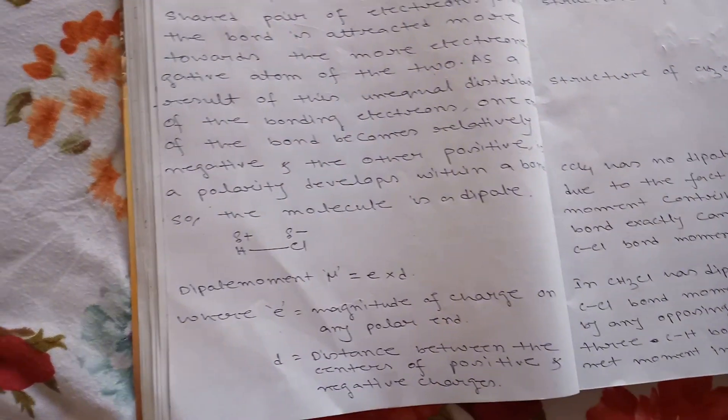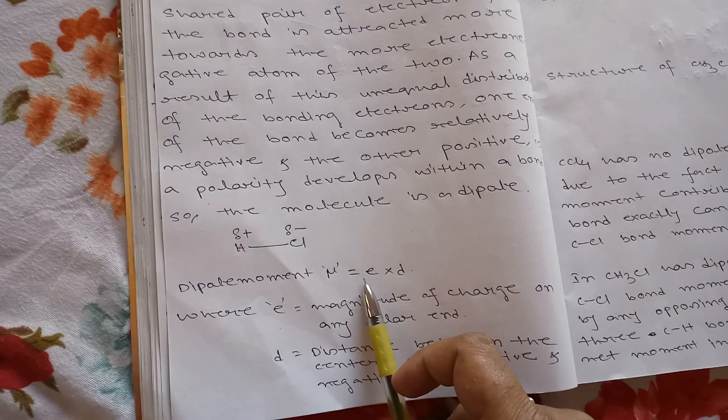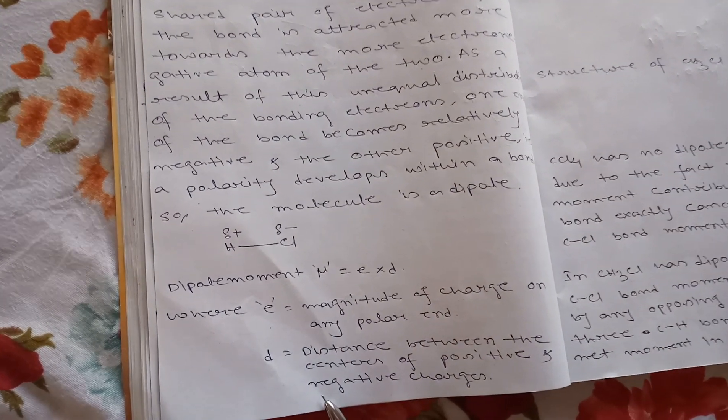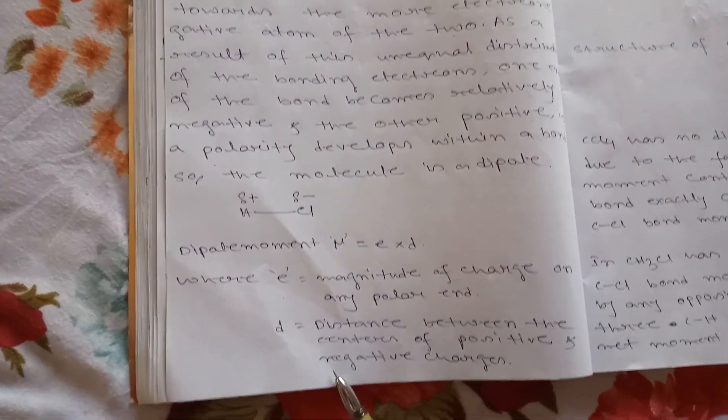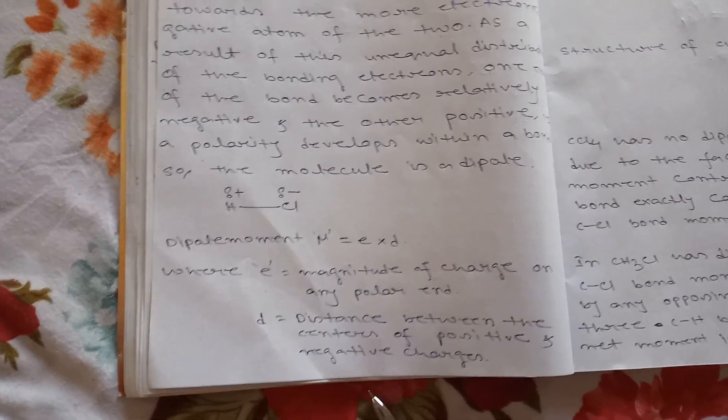There is a formula. Dipole moment of a molecule is denoted by μ = E × D. What is E? E equals magnitude of charge on any polar end and D equals distance between the center of positive and negative charges.